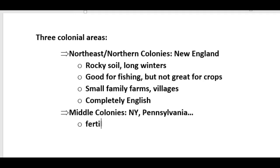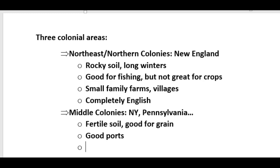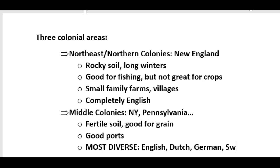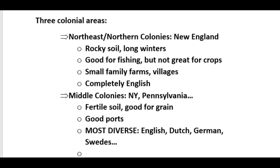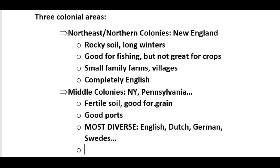The Middle Colonies had fertile soil, good for grain and things like this. The thing to remember about the Middle Colonies is they were the most diverse. You had English, but you also had Dutch, German, and Swedes, just to name a few. They tended to produce food crops and grain crops for export or for movement within the colonies.